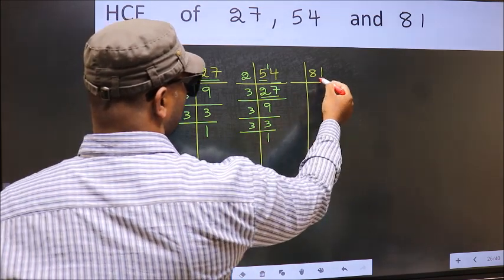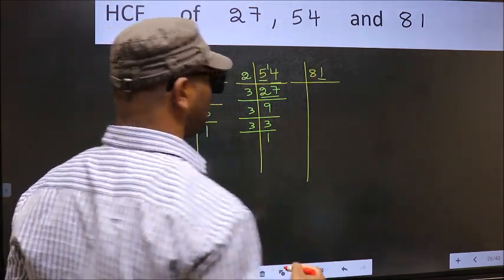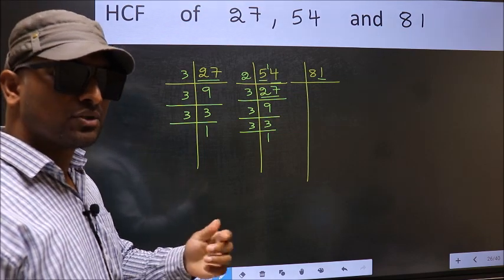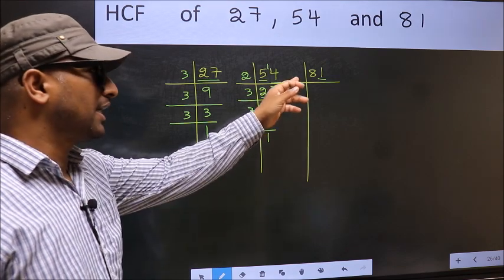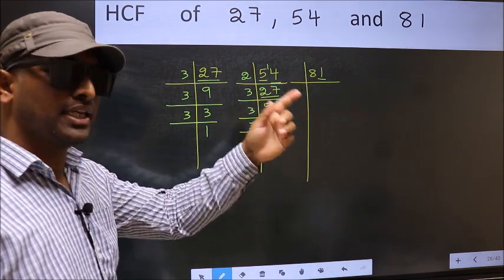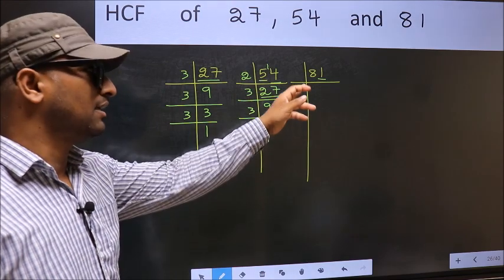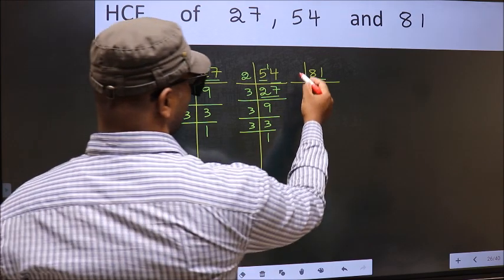Now the other number. Last digit 1 not even so not divisible by 2. Next prime number 3. To check divisibility by 3, for that add the digits. 8 plus 1 we get 9 and 9 is divisible by 3. So this number also divisible by 3.